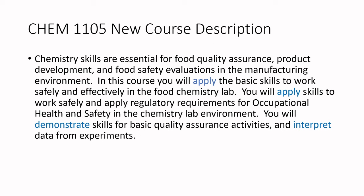This is a level one food chemistry course. In the revised version: 'Chemistry skills are essential for food quality assurance, product development, and food safety evaluations in the manufacturing environment.' Now we've got taxonomy verbs describing what the student will be able to do: 'You will apply the basic skills to work safely and effectively in the food chemistry lab. You will apply skills to apply regulatory requirements for occupational health and safety in the chemistry lab environment. You will demonstrate skills for basic quality assurance activities and interpret data from experiments.' This is now competency-focused.